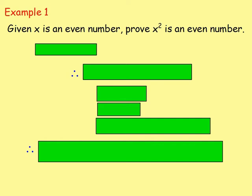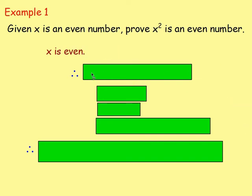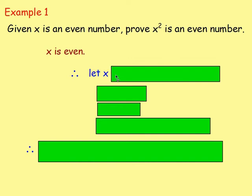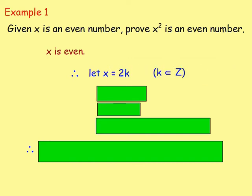Let's look at the first example. Given X is an even number, prove that X squared is an even number. So using direct proof, we start off — we are told that X is an even number. We know that if X is an even number, then we would let X equal 2K for some integer K. K belongs to Z, so K is going to be an integer. If you take an integer K and you double it, you always get an even number, because all even numbers are in the two times table. That is why you let X equal 2K.